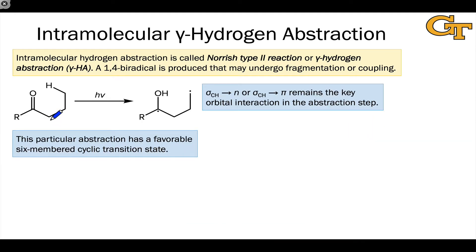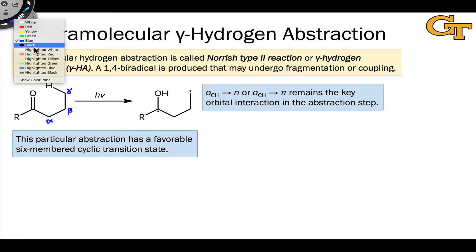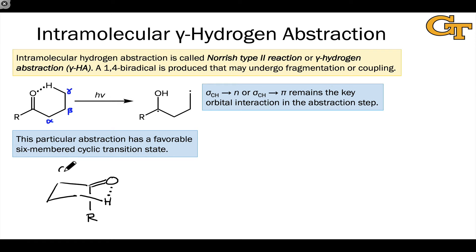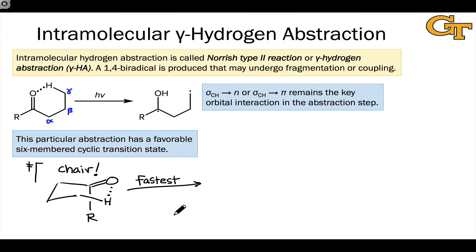The gamma hydrogen is the one abstracted in most Norrish type II reactions, and there's a good reason for this related to the structure of the resulting transition state. As a bond forms between oxygen and hydrogen, we generate a six-membered cyclic transition state, which is associated with a relatively stable geometry — notice the familiar chair structure of cyclohexane. Because this cyclic arrangement is relatively stable, even with respect to a five-membered ring, this is the fastest intramolecular hydrogen abstraction in most cases.